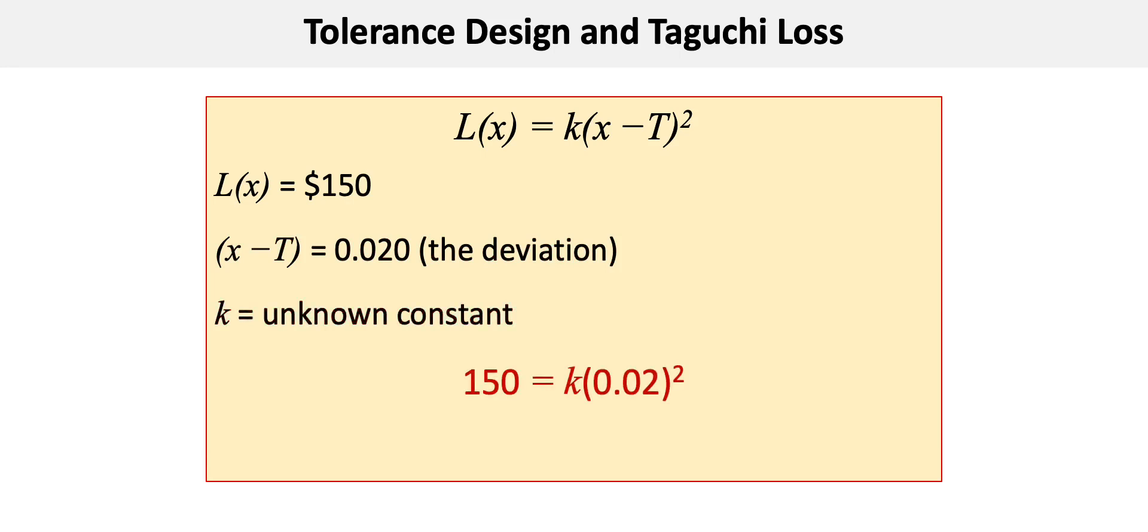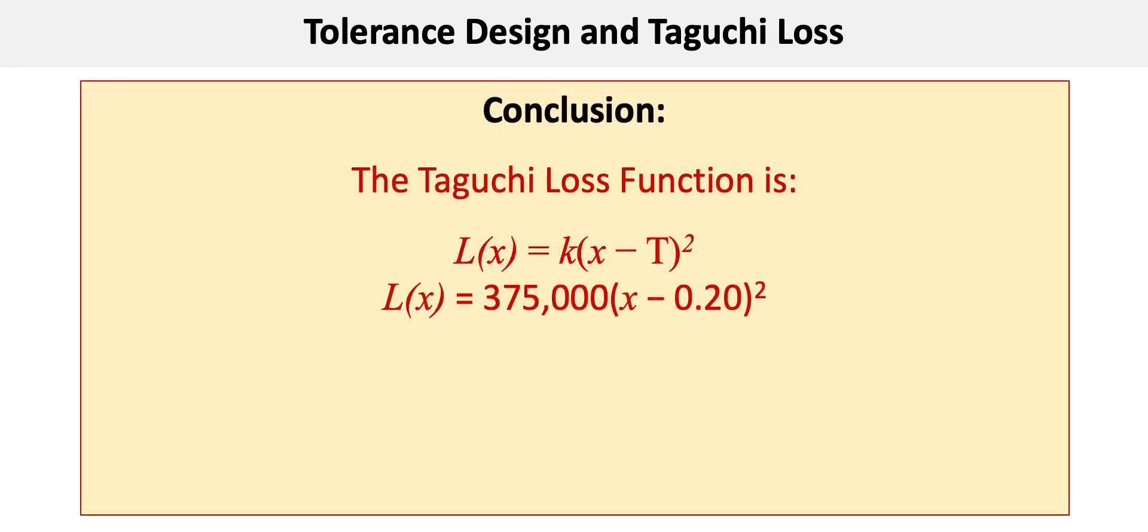So now let's solve. 150 equals k times 0.02 squared. k is then equal to 150 divided by 0.00040, which equals 375,000.